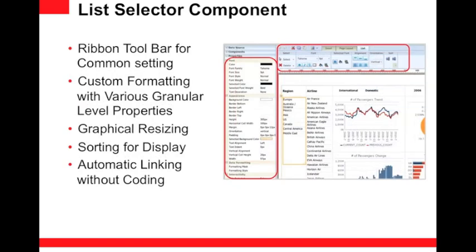To add the list selector component, go to the layout editor — the list is one of the components, just like a chart, table, or pivot table. You simply drop the list selector component into your report. The context-sensitive menu toolbar then helps you set formatting for the list component, such as font size, font style, color, alignment, and sorting based on values.